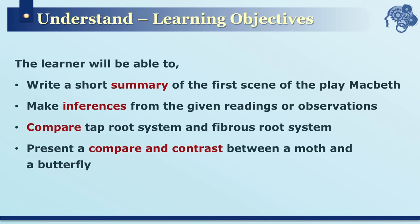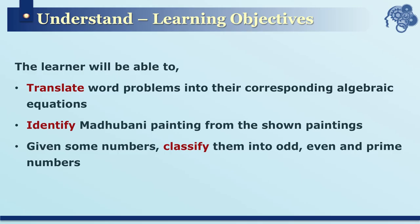Some examples of learning objectives under understand are: write a short summary of the first scene of the play Macbeth; make inferences from given readings or observations; compare taproot system and fibrous root system; compare and contrast a moth and a butterfly; translate word problems into corresponding algebraic equations; identify Madhubani paintings from shown paintings; given some numbers, classify them into odd, even, and prime numbers.